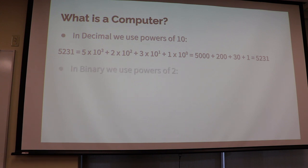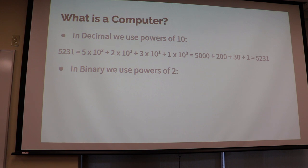However, in binary, computers only know one and zero. So they can't use the numbers two, three, four, five, six, seven, eight, nine and so on. They only know zero and one. So what we have to do is count and do calculations in binary. In binary, we use powers of two.